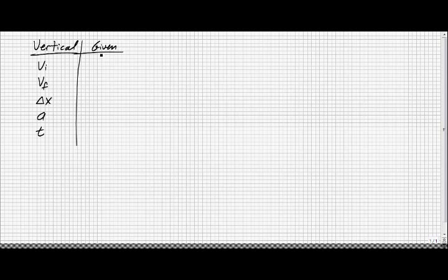Well, initial velocity in the vertical direction has to be zero meters per second. Final velocity we don't know yet. We could go measure the vertical displacement, but let's see if we can't calculate it as we already know the acceleration.